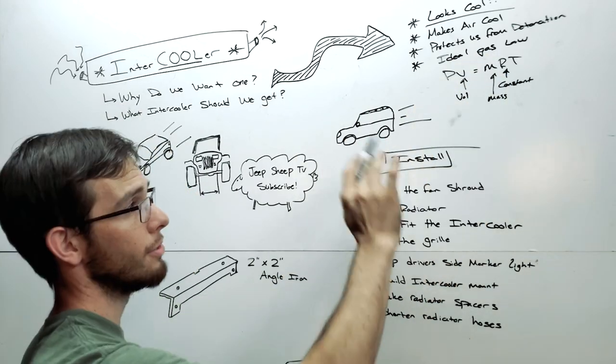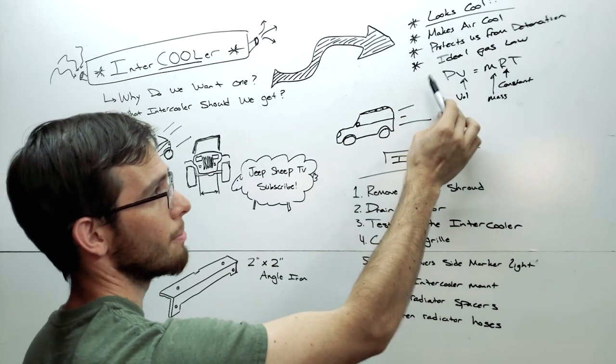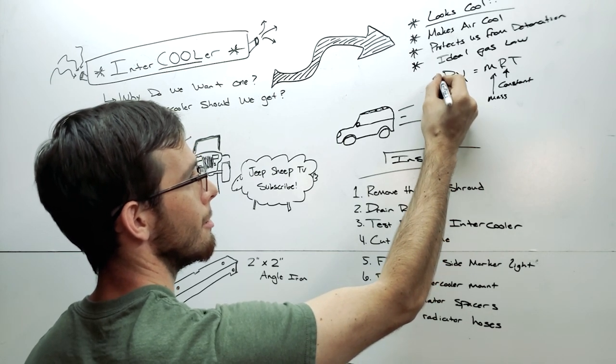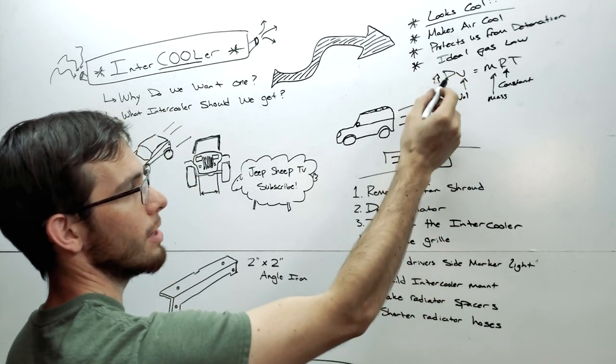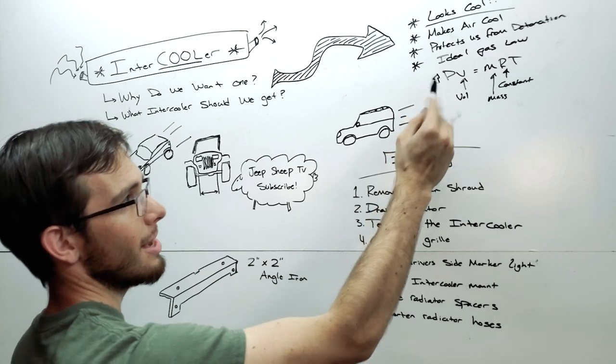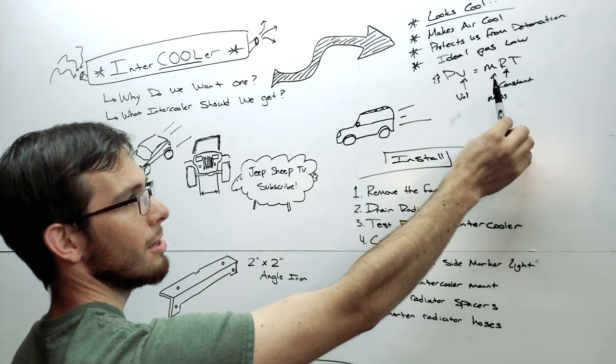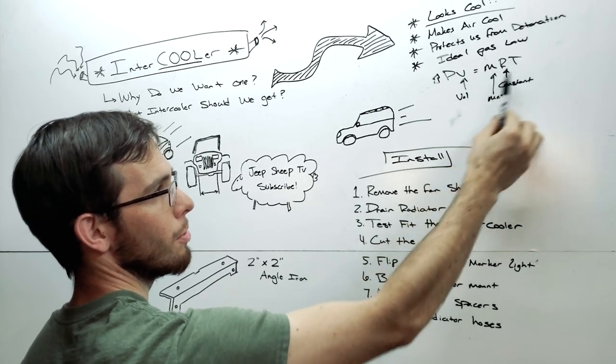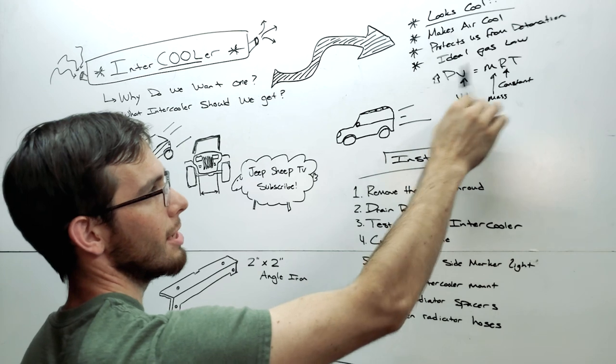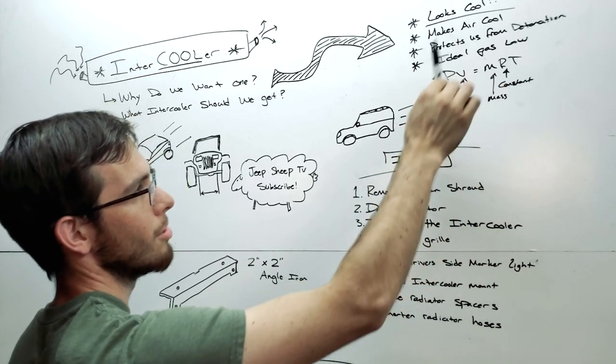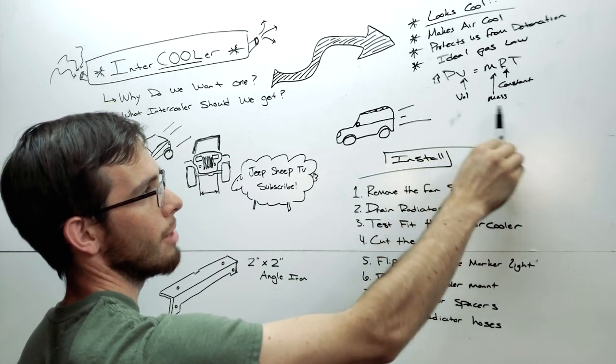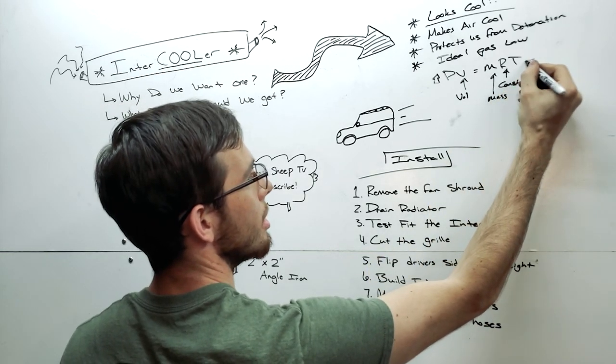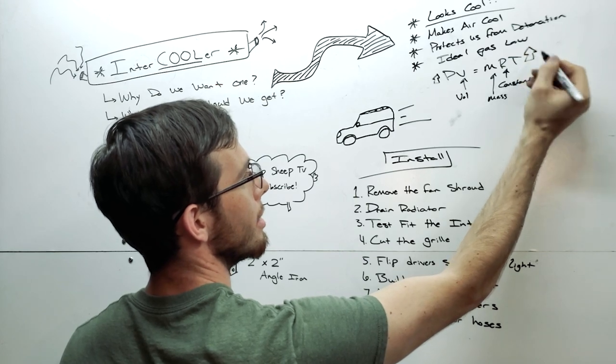So if we increase our pressure, in order for this side of the equation to work because these three values need to multiply together to equal these two values, you need to get this side to be the same number as this side. And if you can't change volume, mass, or your constant in this scenario, then the only thing that can change is temperature. And the temperature has to increase.